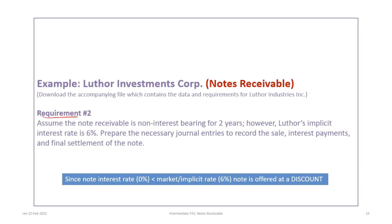Now onto requirement two. In this case we assume the note receivable is non-interest-bearing for a two-year period. We add new information: an implicit rate of 6%. Because we have a note beyond one year, we now have to calculate present value, and to do so we need a market rate or implicit rate of interest. The requirement is to prepare the necessary journal entries for the sale, the interest payments, and the settlement.